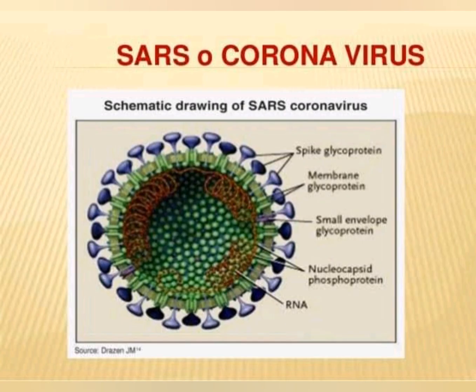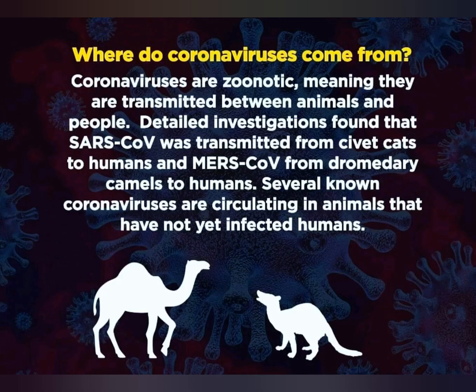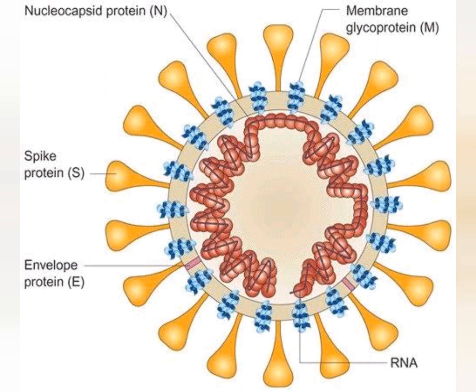Coronaviruses are zoonotic, meaning they are transmitted between animals and people. In rare circumstances, as with the MERS and SARS, animal coronaviruses can evolve and infect people and then spread between people.